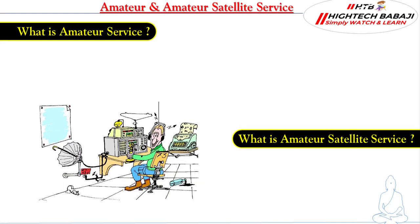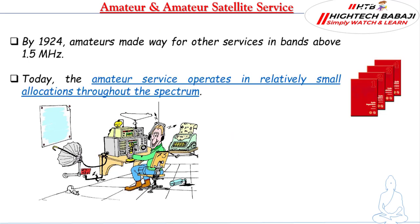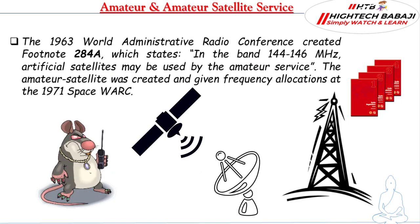By the year 1924, amateurs made way for other services in the bands above 1.5 MHz. Today the Amateur service operates in relatively small allocations throughout the spectrum. In 1963, the World Administrative Radio Conference created footnote 284A, which states that in the band 144 to 146 MHz, artificial satellites may be used by the Amateur service. The Amateur Satellite Service was created and given frequency allocation in 1971, at the Space World Administrative Radio Conference.